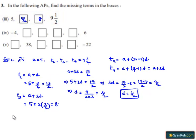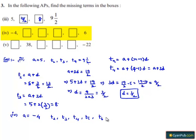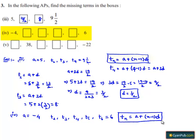Moving on to the fourth bit: the first term a is given as minus 4. The second through fifth terms need to be found, and the sixth term t6 is given as 6. Using the nth term formula, T6 = a + (6-1)d = a + 5d. According to the problem, a + 5d = 6.